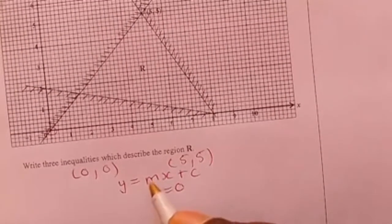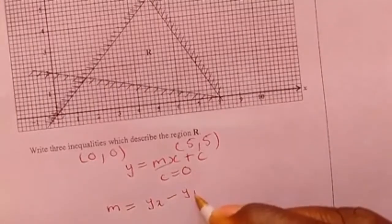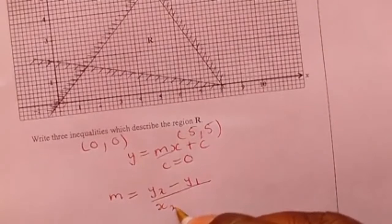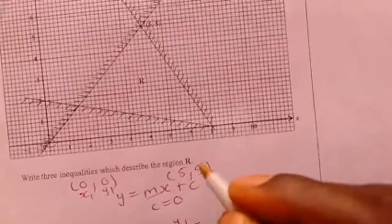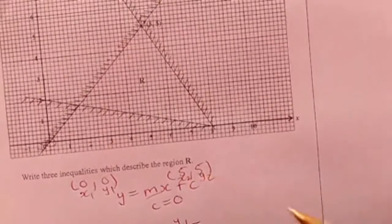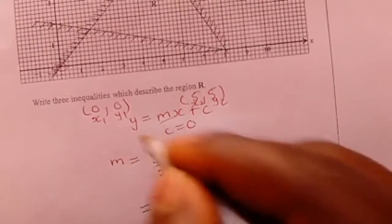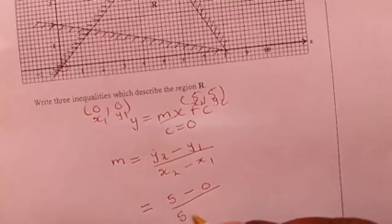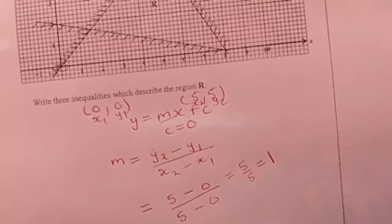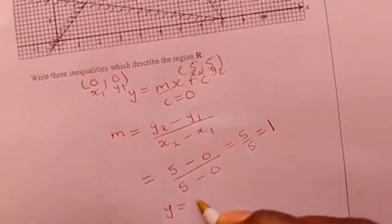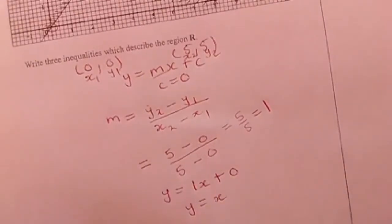We now need to find m which is the gradient of the line. m equals y2 minus y1 over x2 minus x1. With x1=0, y1=0, x2=5, y2=5: substituting — on y2 I put 5, y1 is 0, x2 is 5, x1 is 0. 5 minus 0 gives 5, 5 minus 0 gives 5. 5 divided by 5 means m equals 1. So y equals 1x plus 0, which can be written as y equals x.